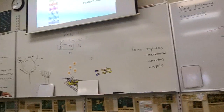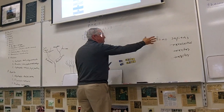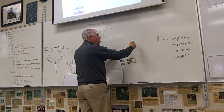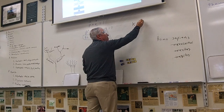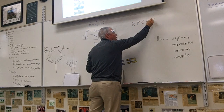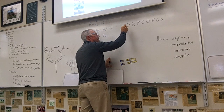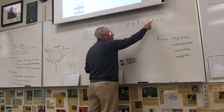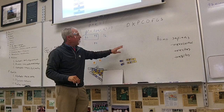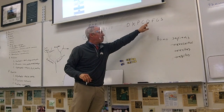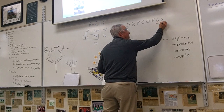That's the genus and specific epithet. The Homo genus fits into a larger category. Remember: Domain, Kingdom, Phylum, Class, Order, Family, Genus, Specific Epithet — and the genus plus specific epithet together is called the species.